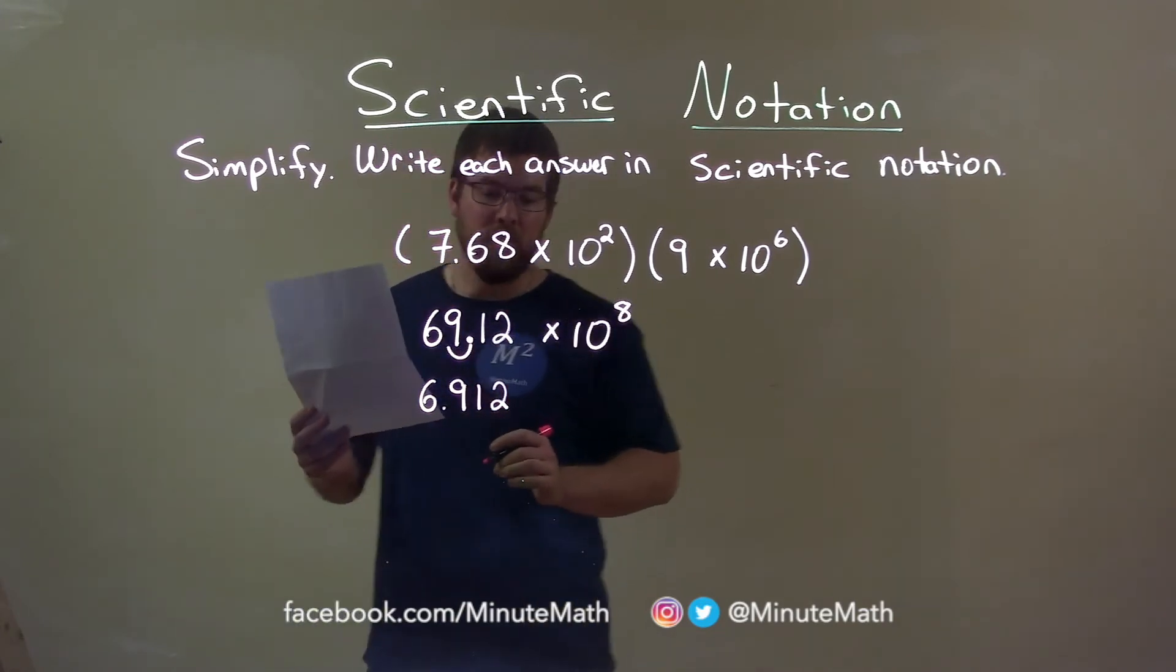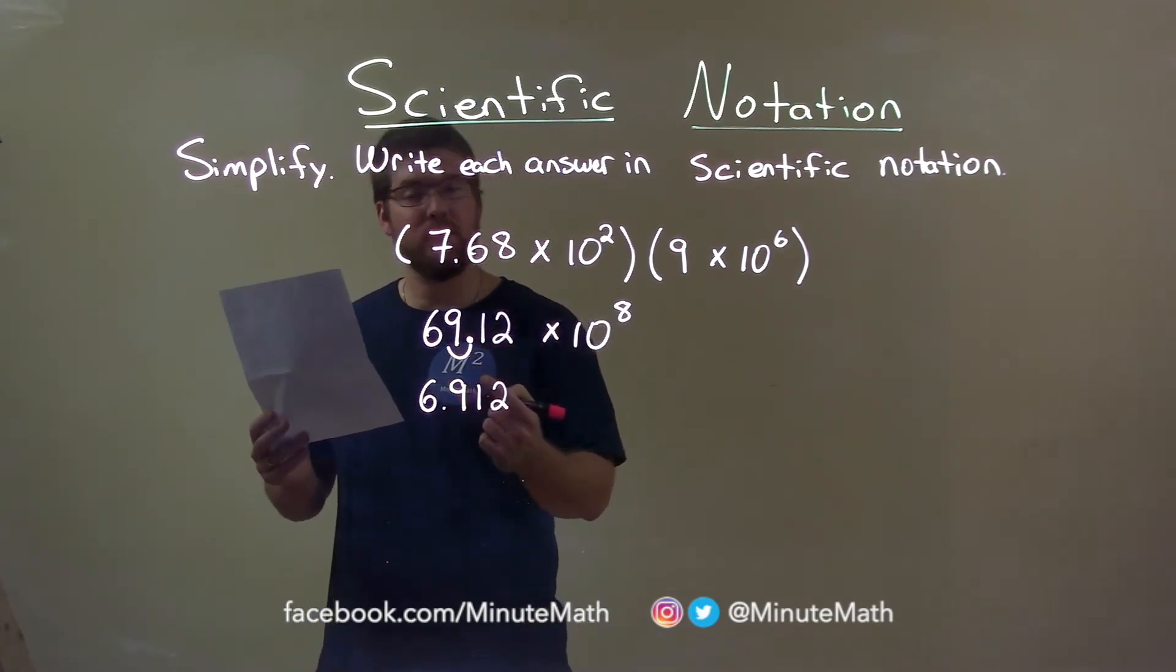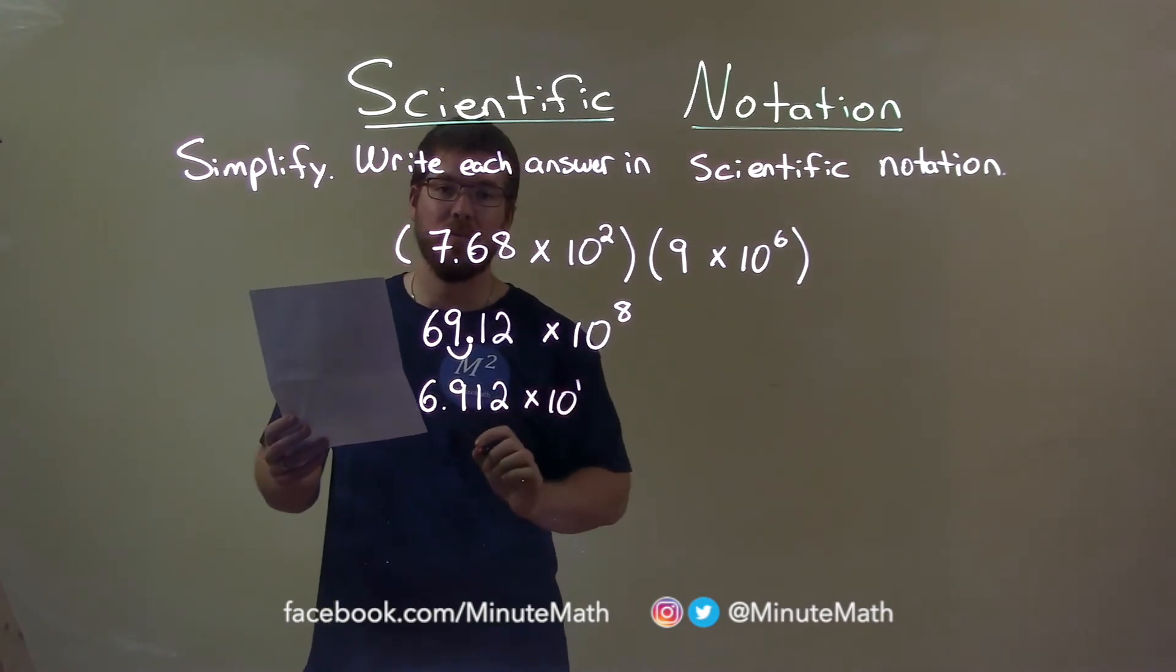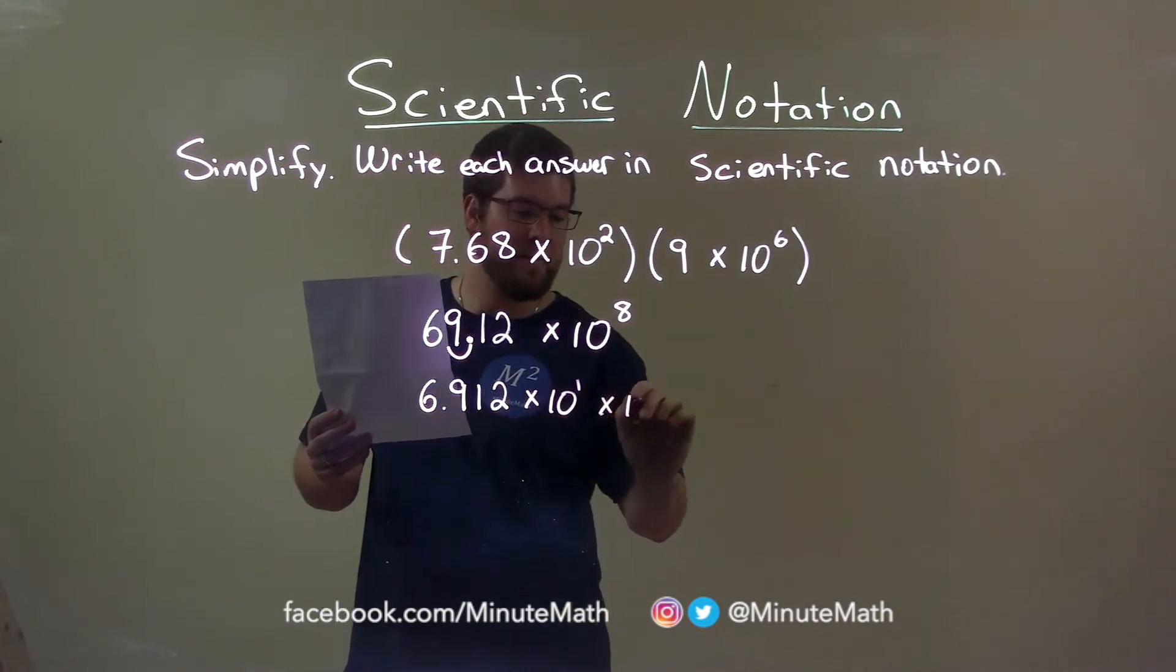But, that's now being multiplied, right, to counteract that decimal placement to the left one. We multiply it by 10 to the 1st power. Bring down now 10 to the 8th power.